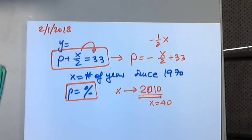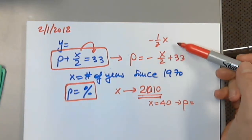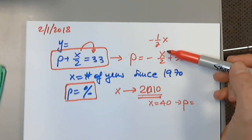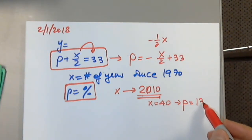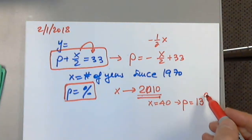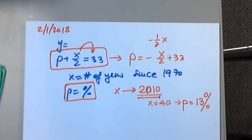When I plug in 40, 40 divided by 2 will be 20, with a minus in front, so p will equal negative 20 plus 33, which is 13. The measurement unit is very important — p is in percentage. So now we have to look at the chart.